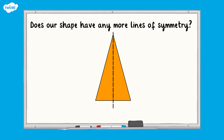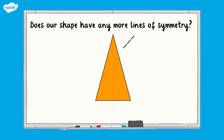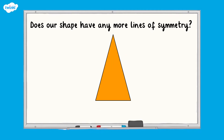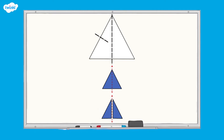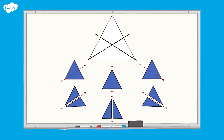Does our shape have any more lines of symmetry? As you can see, when we try to fold the shape in different ways, the two parts are not identical halves, so it does not have more than one line of symmetry. When we fold the equilateral triangle into equal halves, you can see that we can fold the shape in half along one line, two lines, three lines and get identical halves each time. So the equilateral triangle has three lines of symmetry.